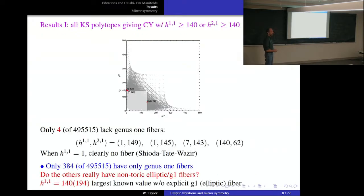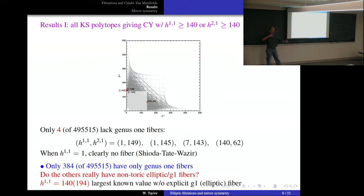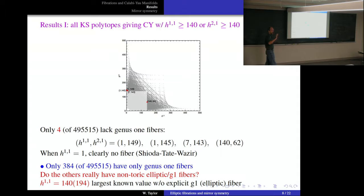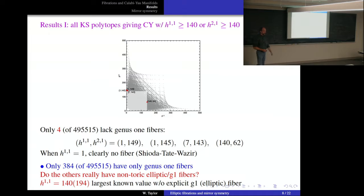These two remaining cases may well still have elliptic fibrations — James talked yesterday about methods using triple intersection structure to compute when there's a fibration. At h¹¹ = 140, that's a difficult calculation. But at this point we can say that essentially all other polytopes have toric elliptic fibrations that are manifest in the database. To confirm: we're just taking each of these ~500,000 polytopes and checking if we can find a pair of rays giving a sub-polytope ∇₂. If any gives an F other than F1, F2, F4, it's elliptic.